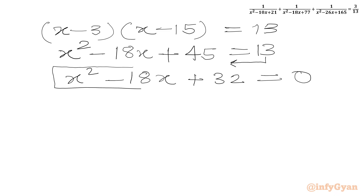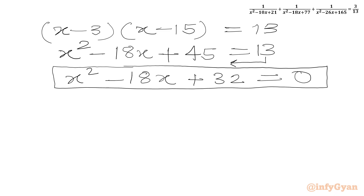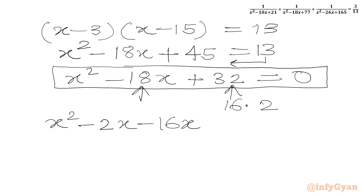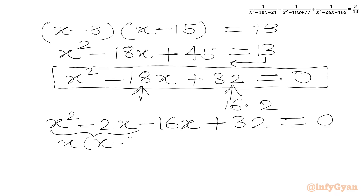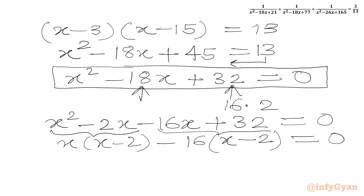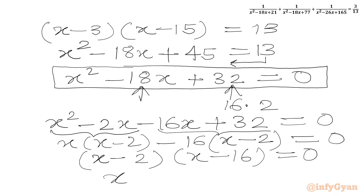We solve this quadratic using factorization. The factors of 32 are 16 times 2, and 16 plus 2 equals 18. So we write x squared minus 2x minus 16x plus 32 equals 0. Taking x common from the first two terms gives x(x minus 2), and minus 16 common from the next two gives minus 16(x minus 2). So we get (x minus 2)(x minus 16) equals 0.